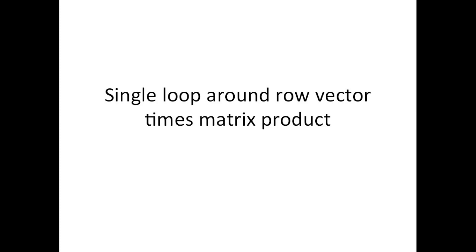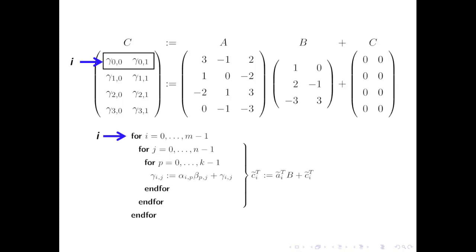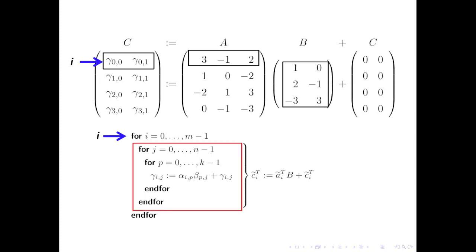Now we can look at the single loop around what turns out to be a row vector times a matrix product. If you look at the row of C being computed, that turns out to be just the corresponding row of A times the matrix B, updating that row of C. So this double loop actually simply implements a row times a matrix product adding to the appropriate row of C.